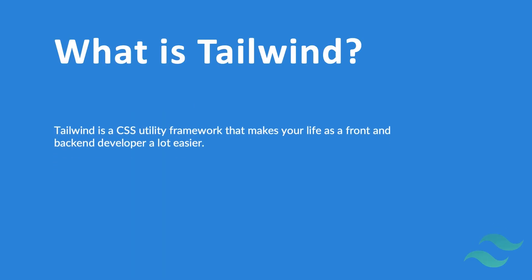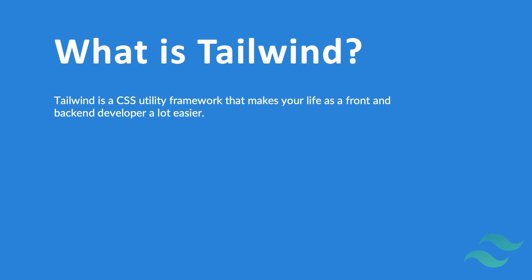So what is Tailwind? Tailwind is a CSS utility framework that makes your life as a front and back-end developer a lot easier. Yes, as a back-end developer as well, since you don't need to write your own CSS anymore. You can see Tailwind as a predefined CSS file with loads of CSS classes you can use to style your elements by just adding classes inside your HTML tags. And you don't need to learn every single class name by heart — Tailwind code is very easy to understand, and if you practice a little, you'll see a pattern and get used to it quickly.